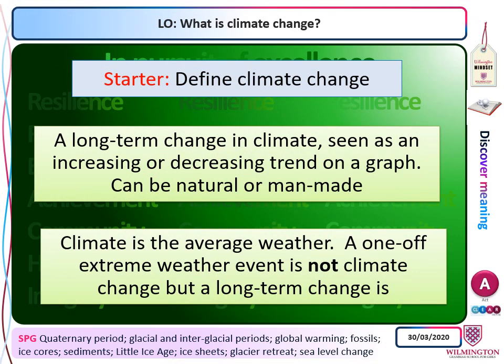Climate change really is a long-term change in the climate. It's not something you would see in the course of a day, a week, a month, a year, or even two or three years. It needs to be much longer term than that. We can best see climate change using a line graph, which in geography we use to show change over time, or possibly on a bar graph too.